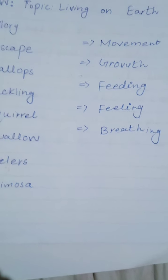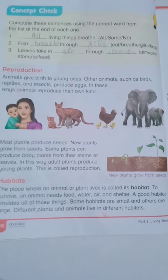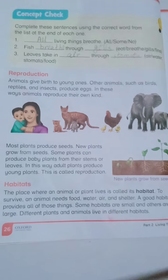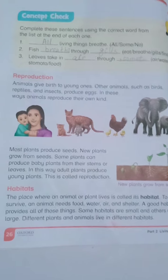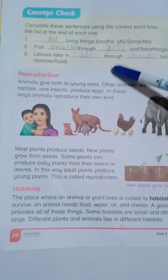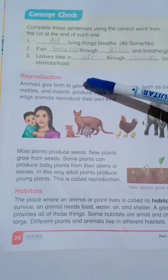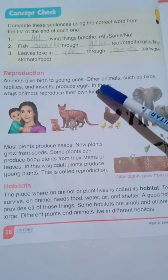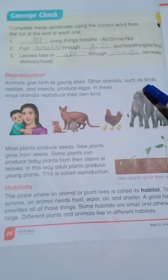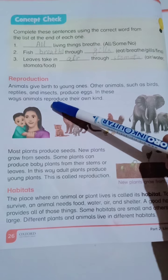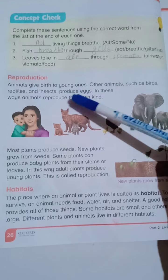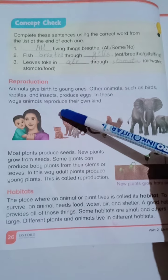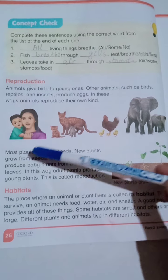Now open your books. Mention date and day at page number 26. Start reading with me. Our topic is reproduction. Animals give birth to young ones. Other animals such as birds, reptiles, and insects produce eggs. In these ways, animals reproduce their own kind.